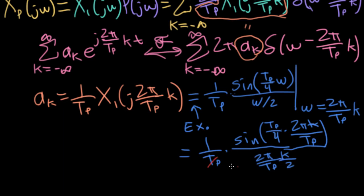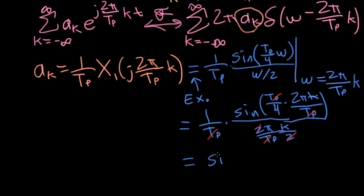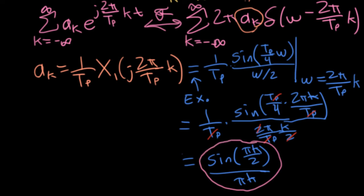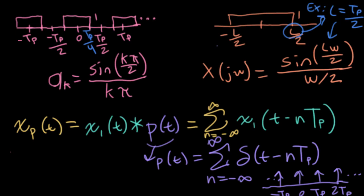So I'll have 1 over tp out in front, sine tp over 4 times 2 pi over tp times k divided by 2. The tp's here cancel, the tp's here cancel, the 2's here cancel. And then 2 divided by 4 is going to give me a half. So I'll wind up with sine pi k over 2 divided by pi k. And if I'm really lucky, that will match the Fourier series coefficients I wrote at the start of the lecture. And lo and behold, they match.